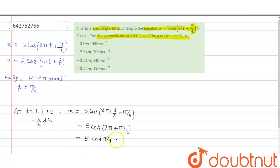Cos pi by 4 is 1 by root 2. So it becomes minus 5 by root 2, or after dividing, it becomes minus 3.54 meter. So displacement at t equals 1.5 second is this.